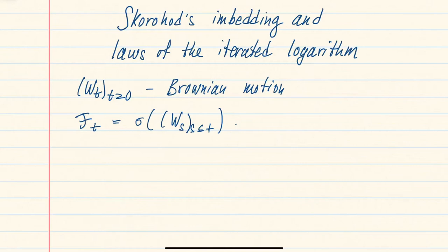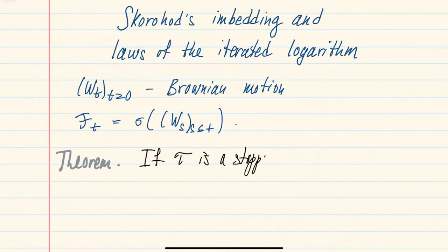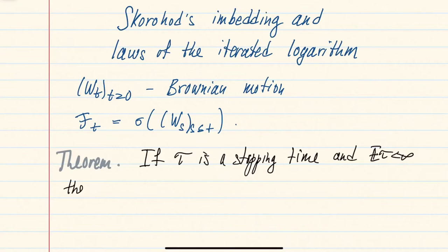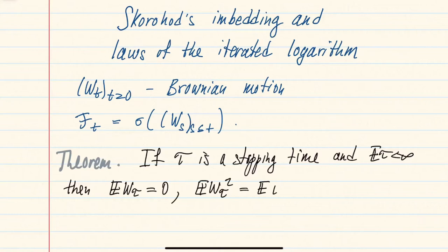Before we prove the Skorokhod embedding, we will need the following technical result. Namely, if τ is a stopping time with respect to the above sigma-algebra such that its expectation is finite, then the expectation of the Brownian motion at this stopping time will be zero, and the expectation of the square of the Brownian motion at this stopping time will be equal to the expectation of the stopping time, which will also be finite.